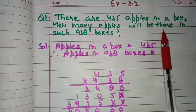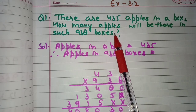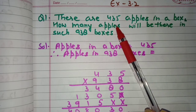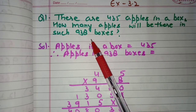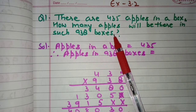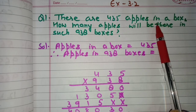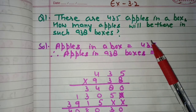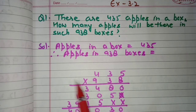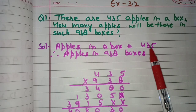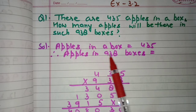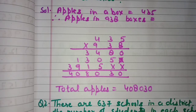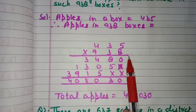How many apples will be there in 938 such boxes? Apples in one box is given: 435. We need to find apples in 938 boxes. Since apples in one box is given and we need to find apples in more than one box, we need to multiply.